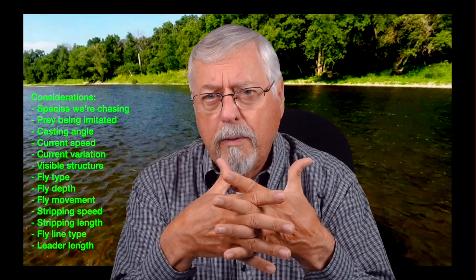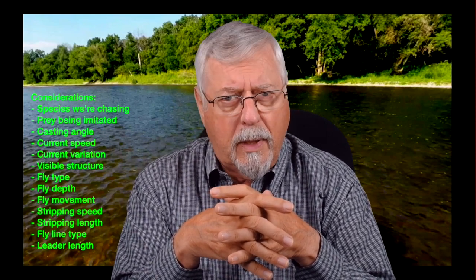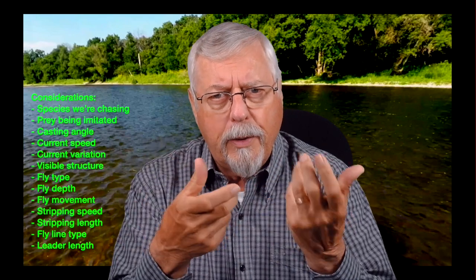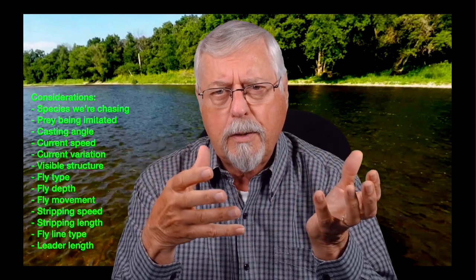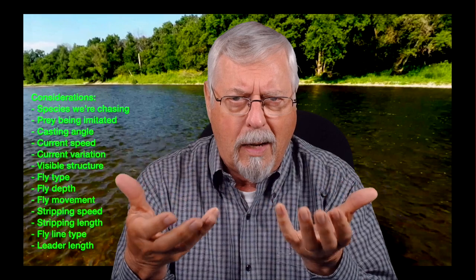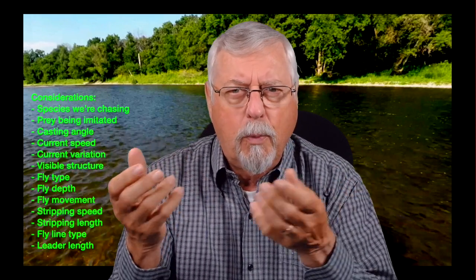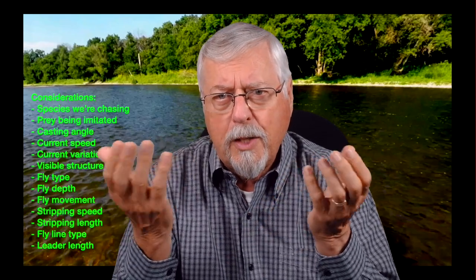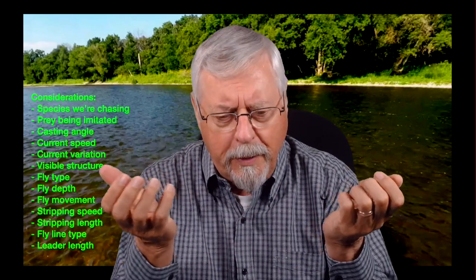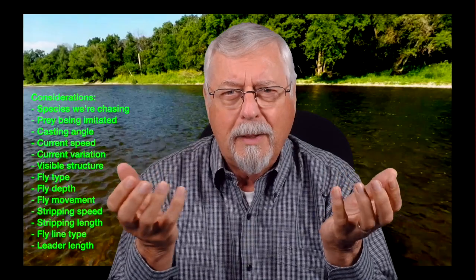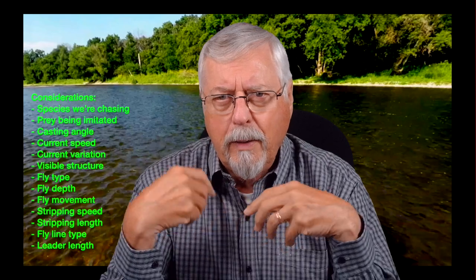We're also going to look at how it works around visible structure. One of the runs I like to fish has a big boulder right in the middle of it, and there's always bass around that boulder, so you've got to think about how you're going to work that in. Of course, the type of fly — big, little, sparse, bushy — how deep we want to fish it, or do we want to fish it near the surface, what kind of movement do we want to give it, or do we just want to let it swing. Then there's stripping speed, how long or short our strips are, the fly line type — intermediate, floater, full sinker — and the leader length. That all goes into the mix.